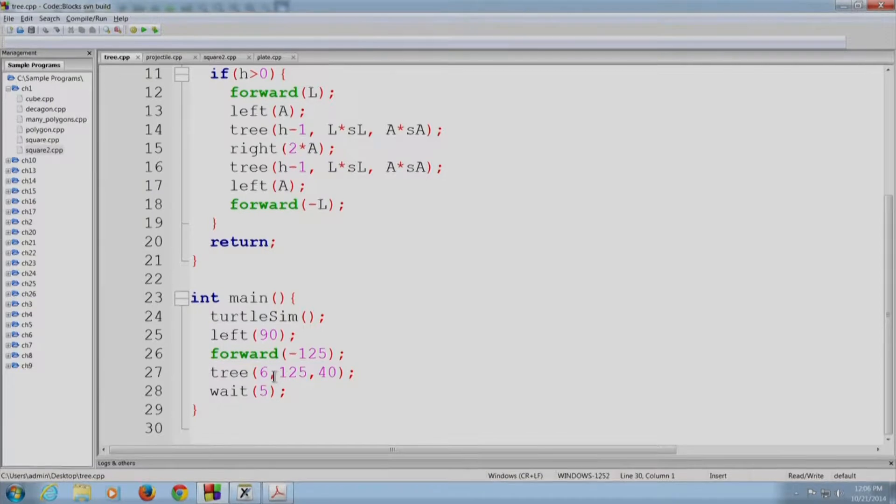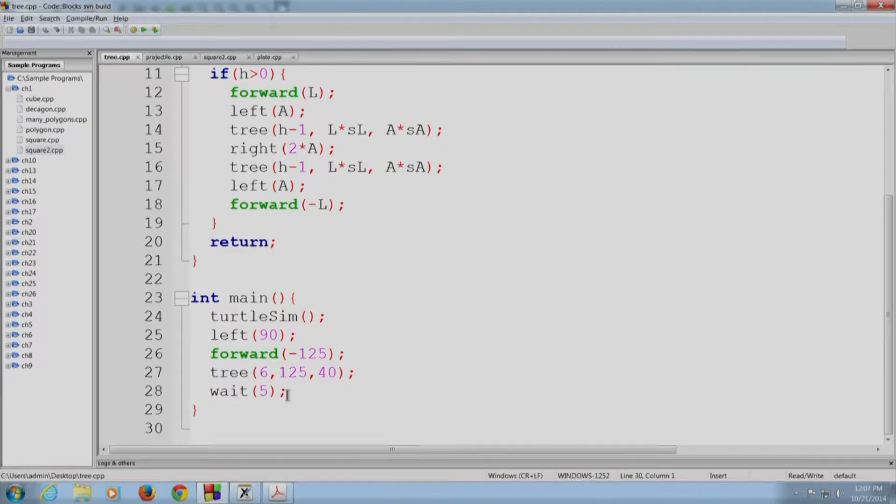The first argument to it tells how many times the tree is going to branch. So in this case it will branch 6 times. So it will branch first then it will call another tree to be drawn, but this time the new tree that is going to be called is only going to branch 5 times. So there will be 6 levels of branchings overall. The trunk of the first tree that is drawn will have length 125 pixels and the third argument tells you what the angle between the 2 trunks is. Finally after the tree is drawn we are going to wait for 5 seconds so that we can see what the turtle has drawn, okay. So now I will turn to the function which draws the tree.